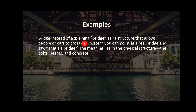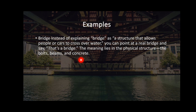For example, instead of explaining 'bridge' as 'a structure that allows people or cars to cross over water,' you can point at the real bridge and say 'this is a bridge.' This meaning lies in the physical structure — the boards, the beams, and the concrete. You don't have to define 'car' in the dictionary; you have to point out a car. You don't have to define 'bridge' in the dictionary; you have to point and say 'this is a bridge.'